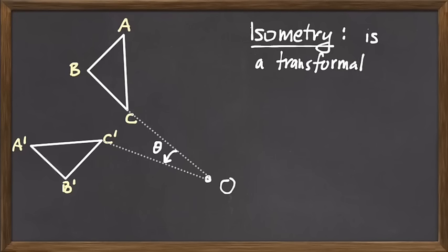However far apart two points are before we apply an isometry, the images of those points will be the same distance away from one another after we apply the isometry. So it's a transformation which preserves distances.